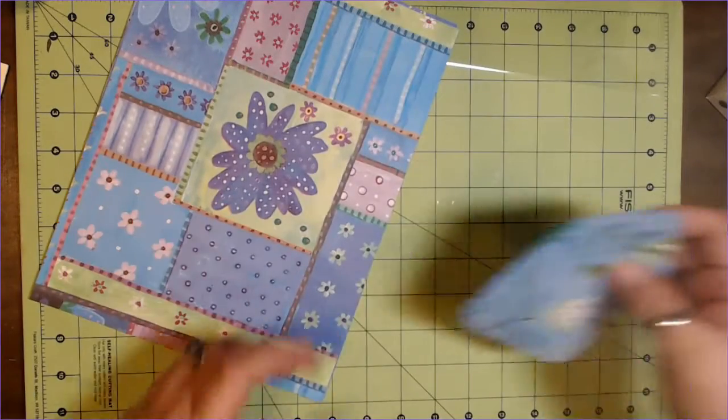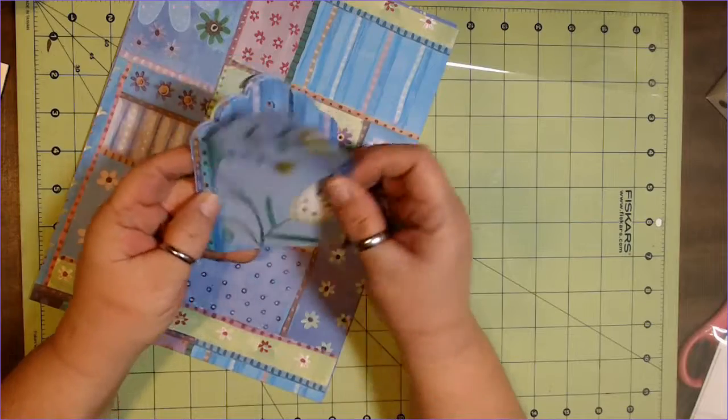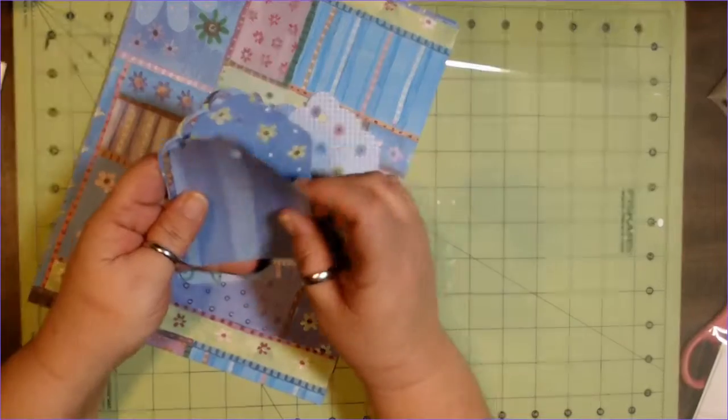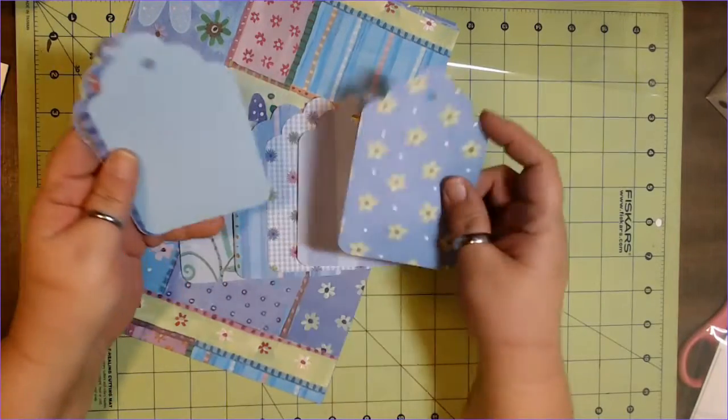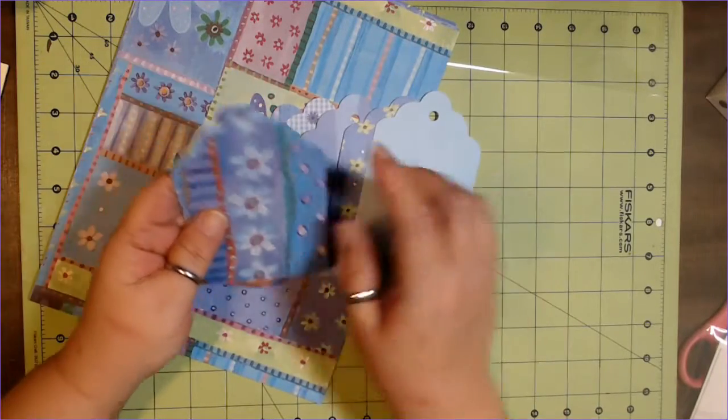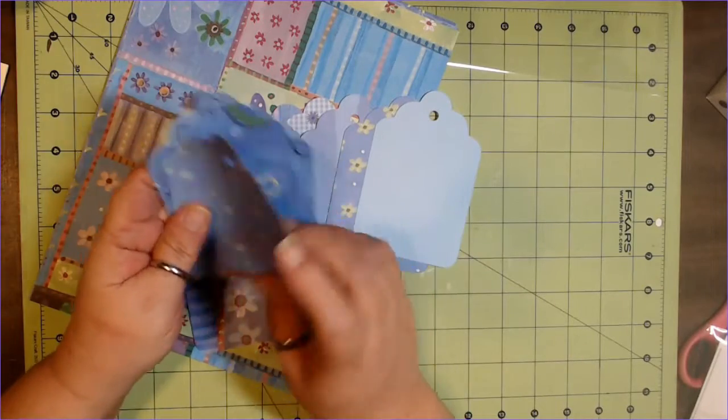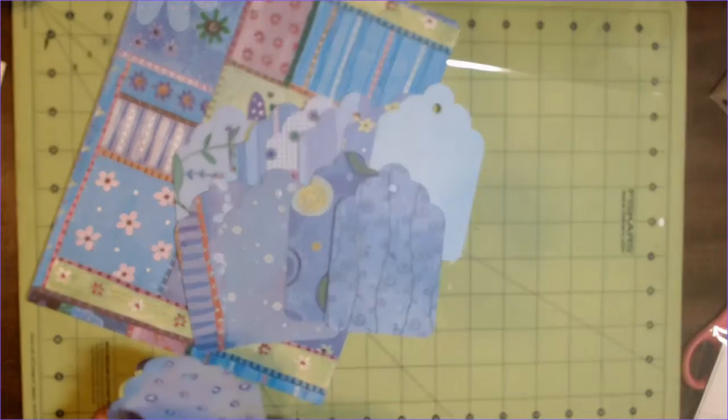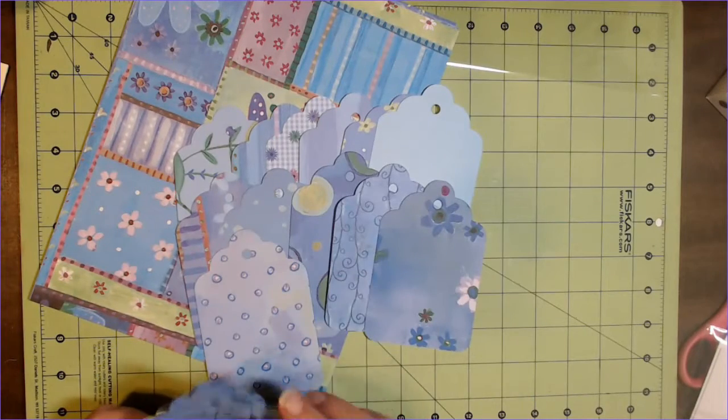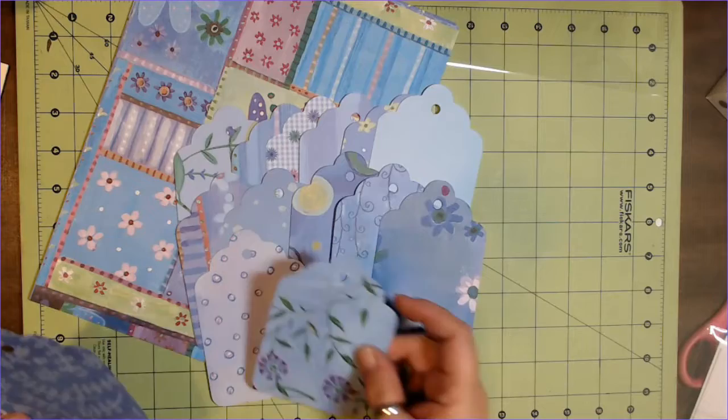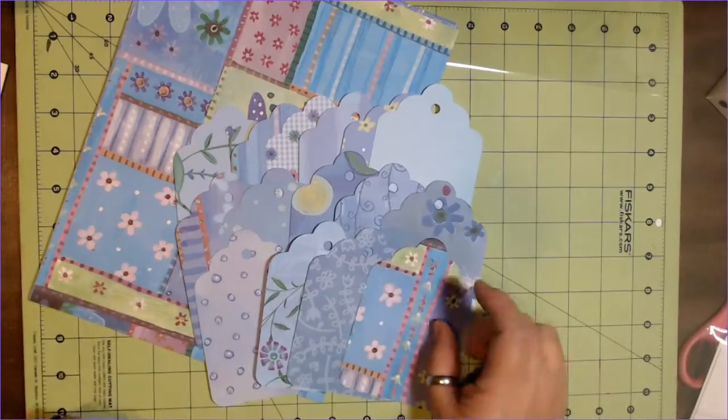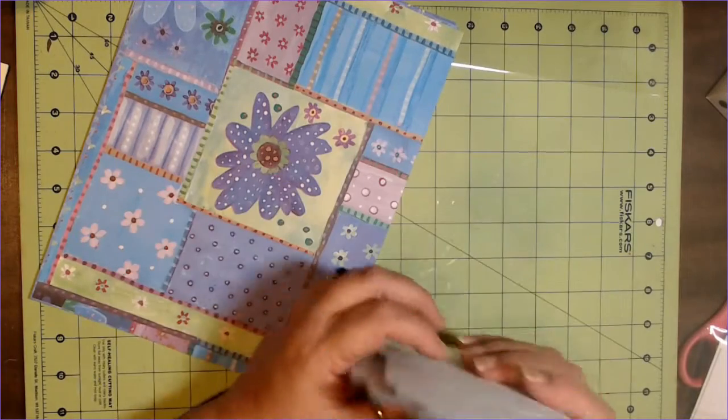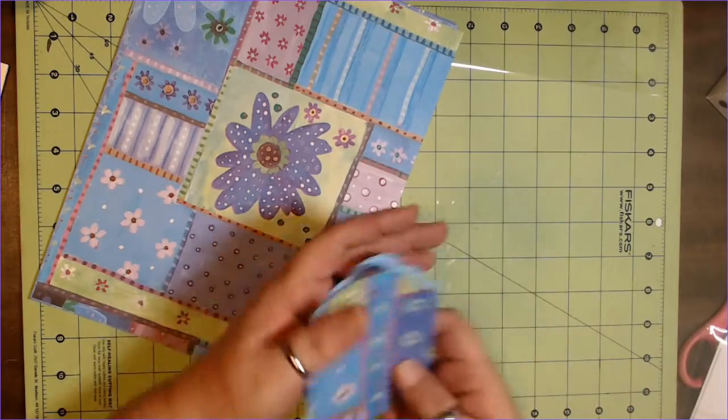Then we're going to get the coordinating tags. So you get 1, 2, 3, 4, 5, 6, 7, 8, 9, 10, 11, 12, 13, 14, 15. So each one has at least 12 tags. Some of them have a little bit more. So you get tags.